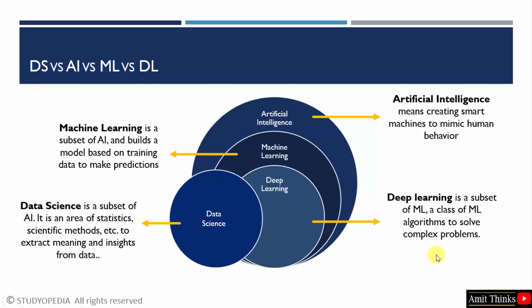Deep learning can be considered a subset of machine learning. It is a class of machine learning algorithms used to solve complex problems. It focuses on using artificial neural networks with multiple layers to model and understand complex patterns in data. Deep learning algorithms are inspired by the structure and function of the human brain — specifically, its interconnected network of neurons. This is why we discuss it here: generative AI is a part of deep learning.